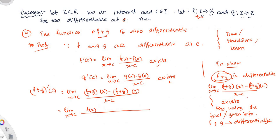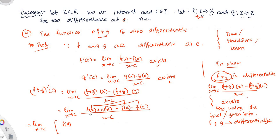Here f of x, by addition and algebra, I can write f plus g of x, minus f(c) minus g(c), over x minus c. Rearranging: this is f(x) minus f(c), and g(x) minus g(c), then divided by x minus c.